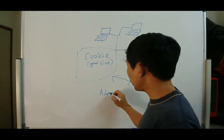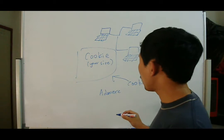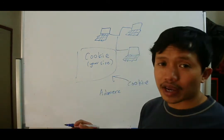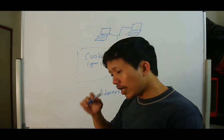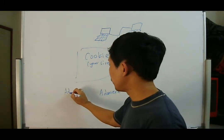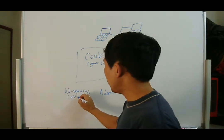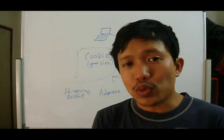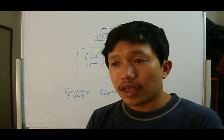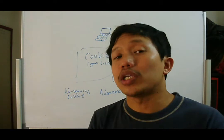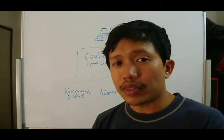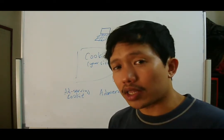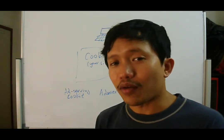That leads to this thing called adware — you can also call it an ad-serving cookie. There are various kinds of adware; it's a generic term. Basically, what this cookie does is keep track of what you do online so it can pretty much guess what your interests are. Then it will update a server, and the server will determine what your interests potentially are. So the next websites you visit, there will be advertisements and banners targeted to your supposed interests. A lot of websites actually do this.